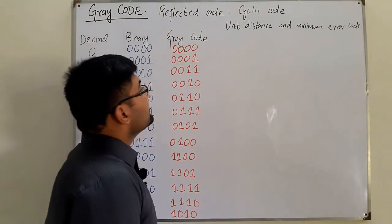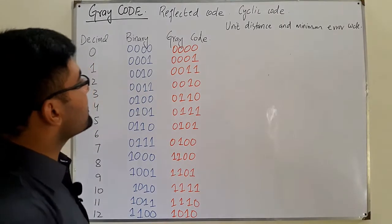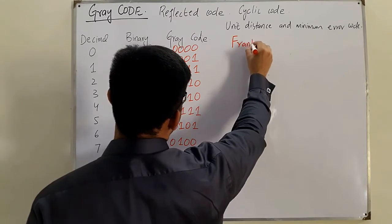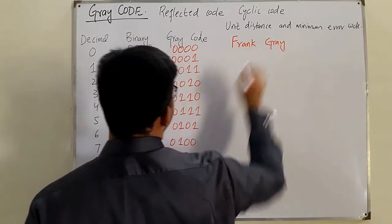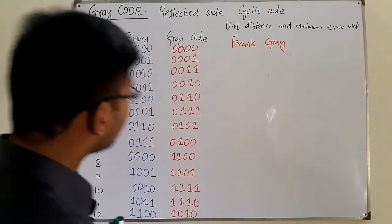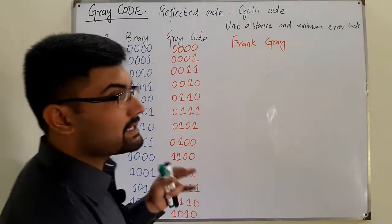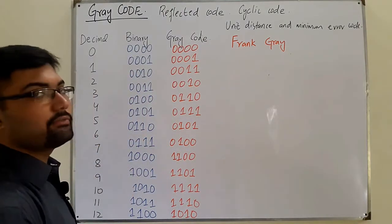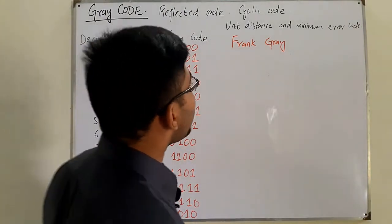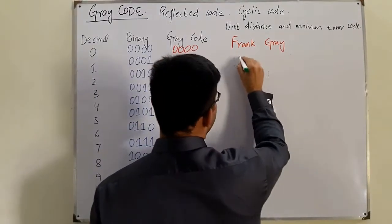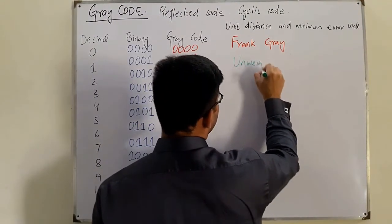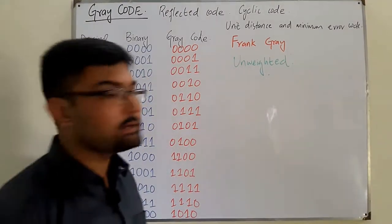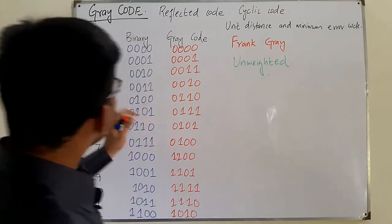This code was first given by a mathematician named Frank Gray, and therefore it's named after him. First of all, this is an unweighted code in which each position does not have any positional weight.